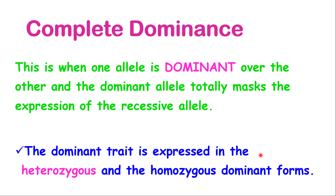Let's look at complete dominance first. When we talk about genetic dominance, we are mainly observing the heterozygous form, which means when two different alleles meet. We look at that type of expression to explain genetic dominance. Complete dominance is when one allele is dominant over the other, and the dominant allele totally masks the expression of the recessive allele. It's important to note that the dominant trait is expressed in the heterozygous and also the homozygous dominant forms.